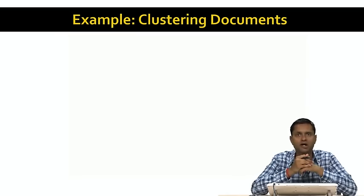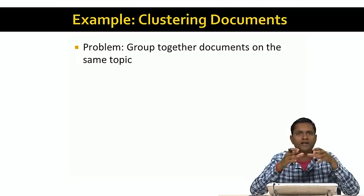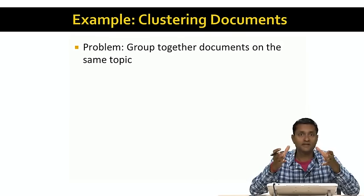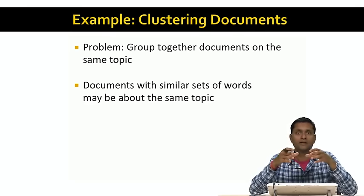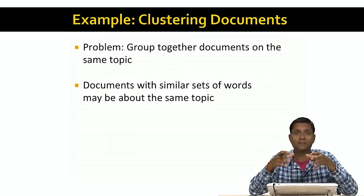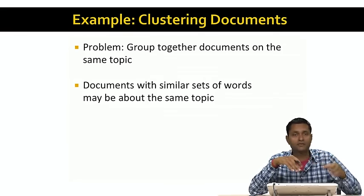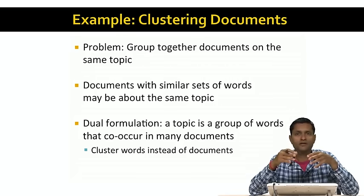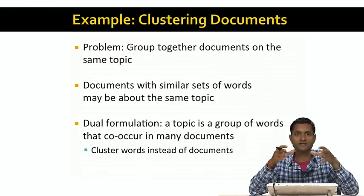Another example is clustering documents. We'd like to group together documents on the same topic — and a topic is just a set of words that appear together frequently. Documents with similar sets of words might be about the same topic, so we want to cluster documents based on their similarity in the space of words. A dual problem is to find topics instead of documents: a topic is a group of words that co-occur in many documents, so we can cluster words in the space of documents to find topics rather than document clusters.